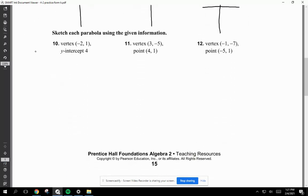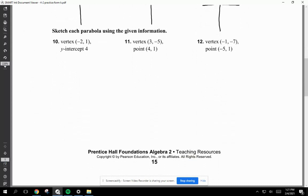So sketch each parabola using the given information right here. So you're going to sketch this parabola right here. This is pretty easy too. The vertex is negative 2, 1. Negative 2, 1. That's the vertex.